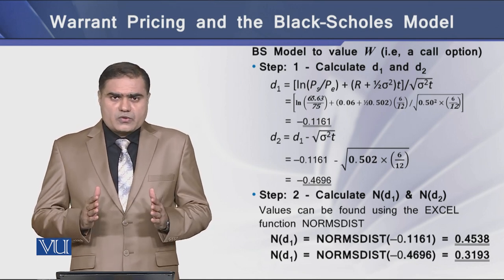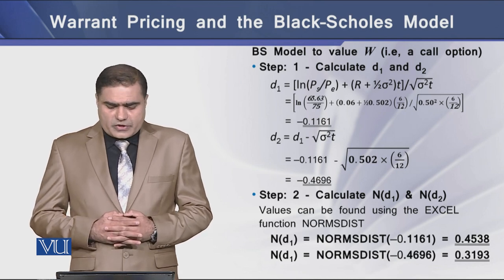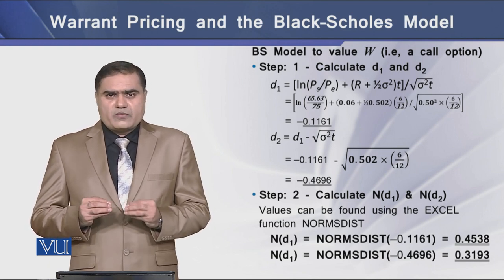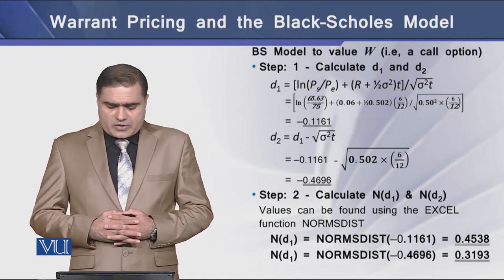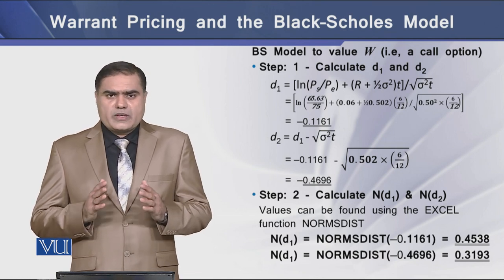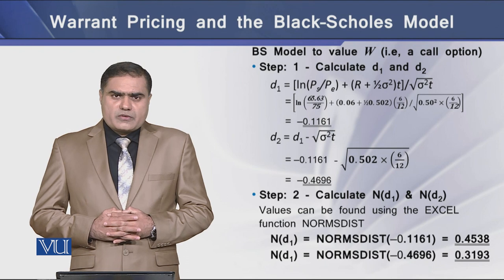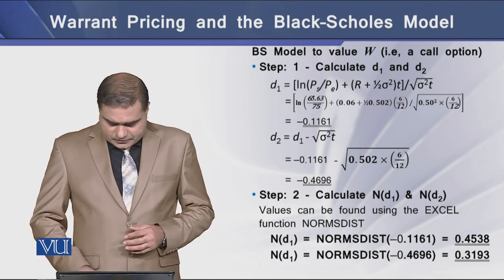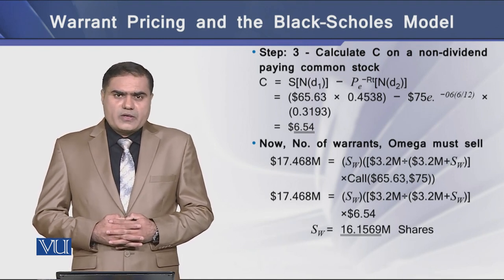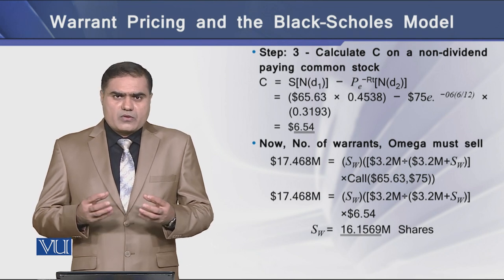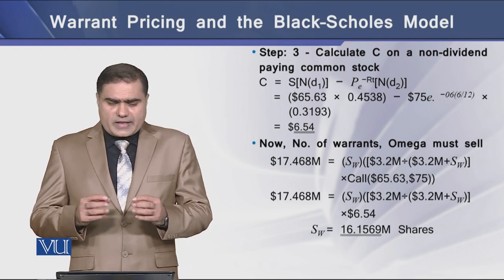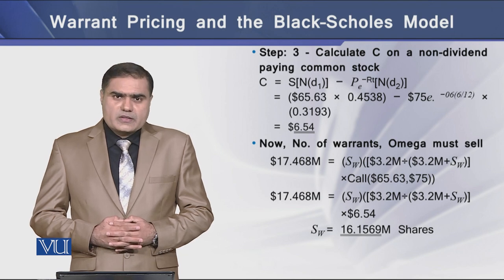The BS model works in three steps. First, we determine the values of D1 and D2. Second, using D1 and D2, we determine N(D1) and N(D2) using the normal distribution function available in Excel. In the third and final step, we calculate the value of C, which is the value of the call. Putting the computed values into the BS model gives us a value of C equal to $6.54.